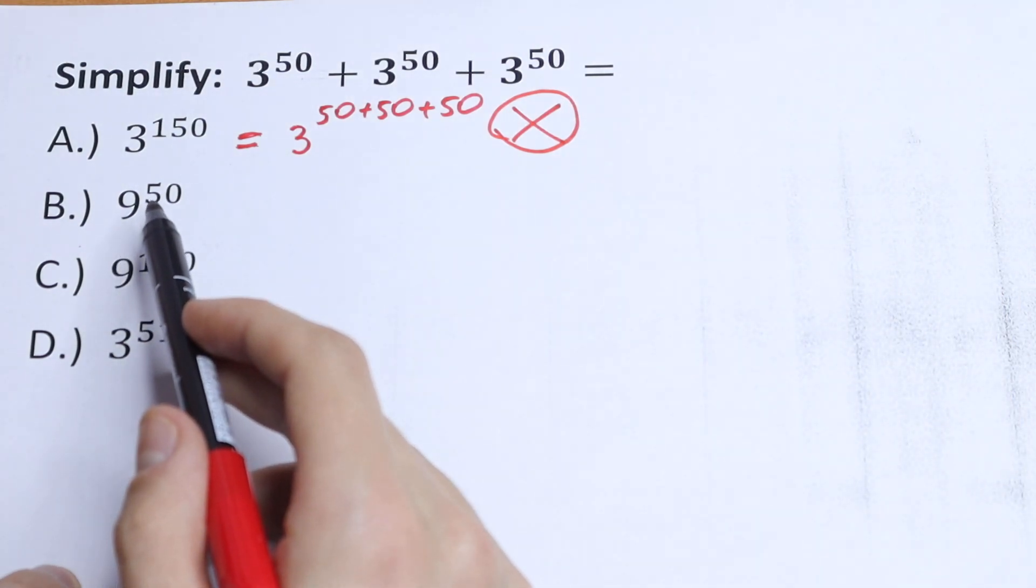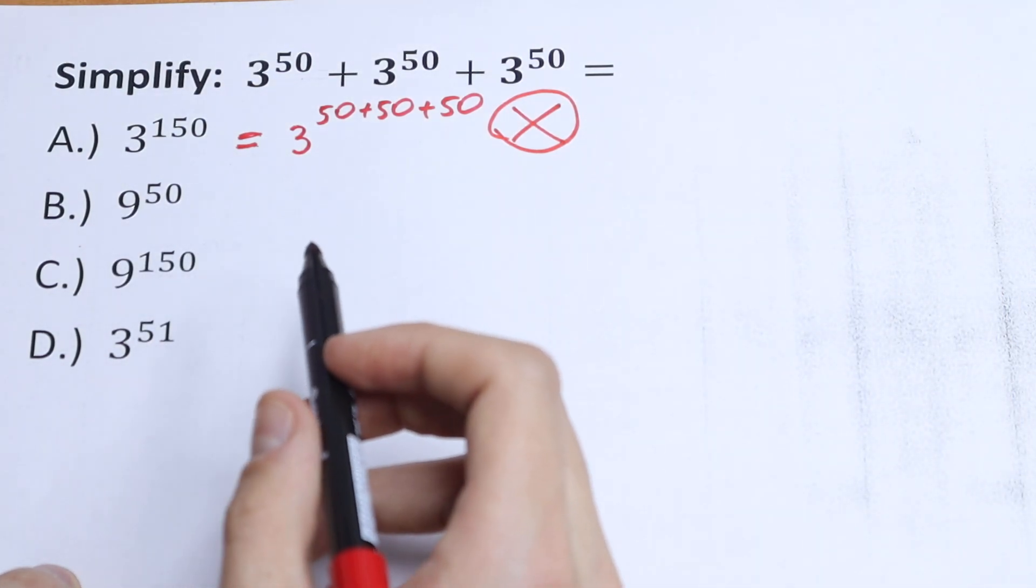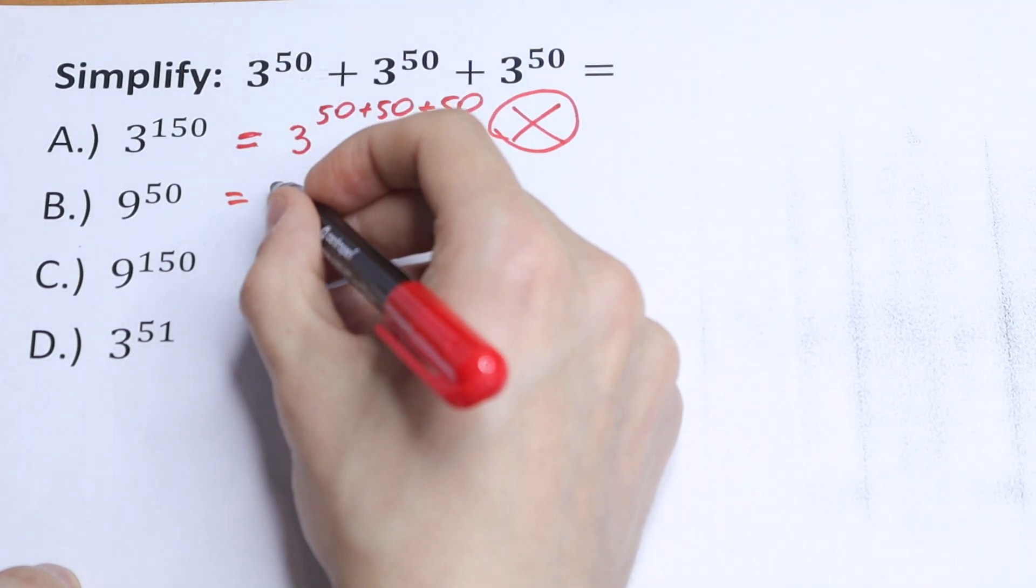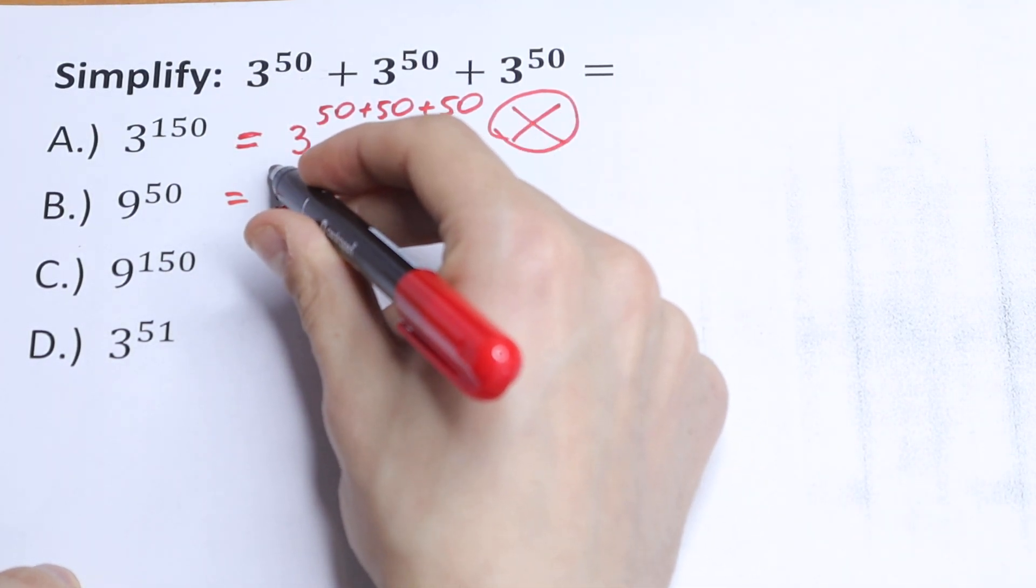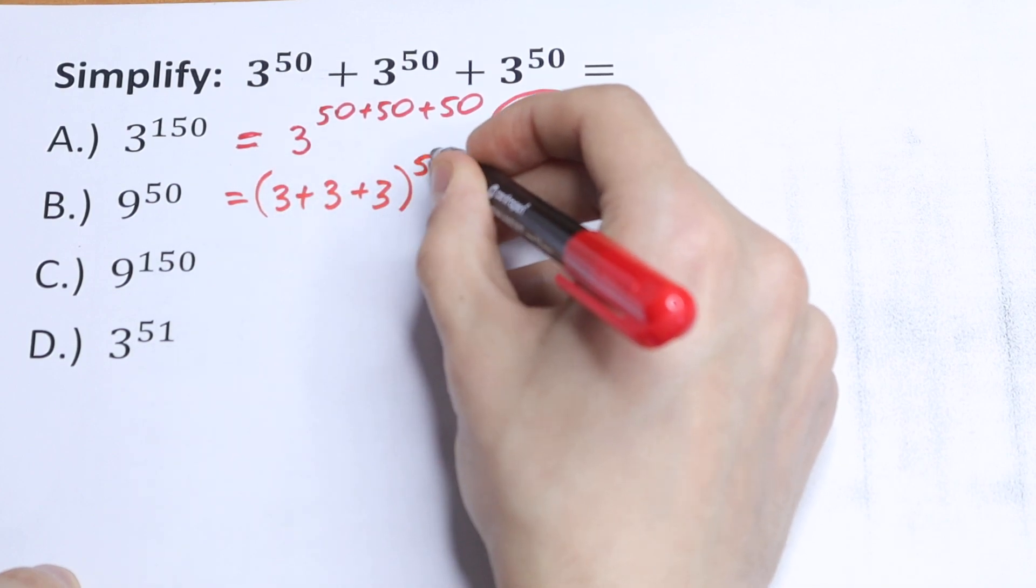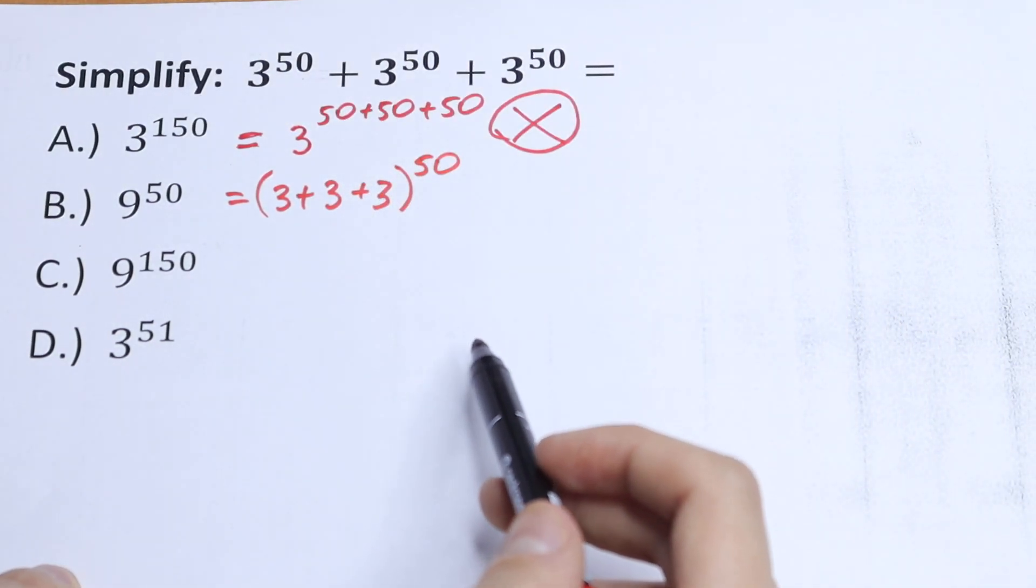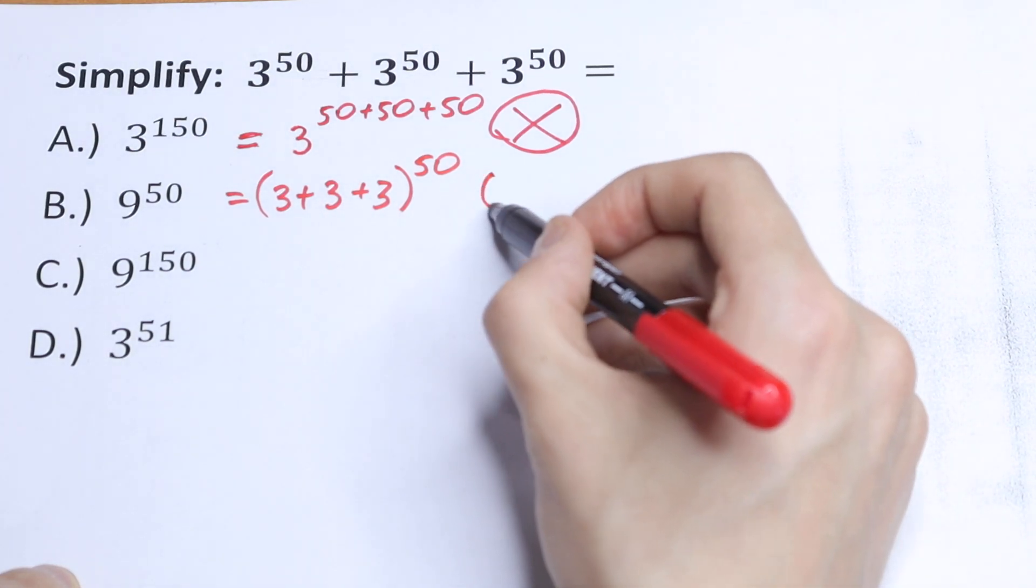For those who choose answer B, 9 to the power 50: we can write this 9 as 3 plus 3 plus 3, all raised to the power 50, which is not the same as in the beginning, so this is not correct.